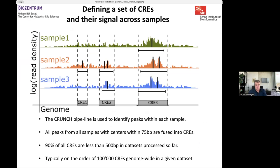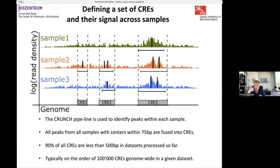After this, in each sample we ran CRUNCH and found all binding peaks. We then cluster all peaks from all samples whose centers are within 75 base pairs of each other — using 150 base pairs, the size of one nucleosome region, as a distance measure to cluster things that sit essentially under the same nucleosome. These are fused together into unified CREs.